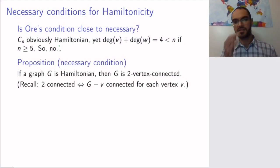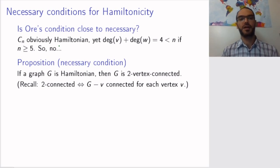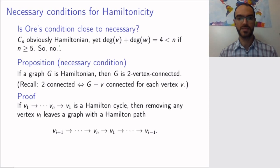But there is a necessary condition that is given in different terms. If you have a graph that is Hamiltonian, then it is two-vertex-connected. So in order to be Hamiltonian, necessarily the graph has to be two-vertex-connected. Remember, two-vertex-connected means that if you just remove one vertex, the graph will still be connected. So let's prove this proposition.